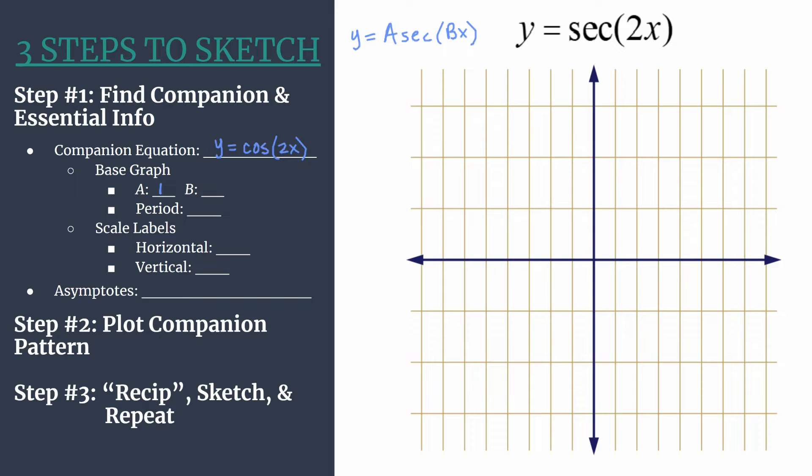We see that b is the coefficient of x. So b is 2. It tells us there are 2 cycles of cosine between 0 and 2π. And it also helps us calculate the period of this companion graph. To get the period we calculate 2π divided by b. So 2π divided by 2, we have a period of π. That's the length of one horizontal cycle.